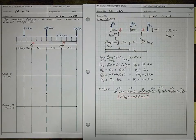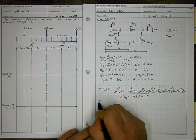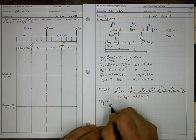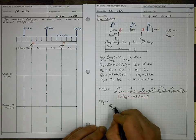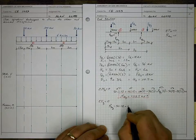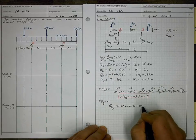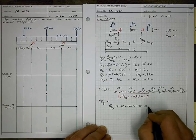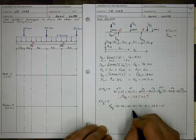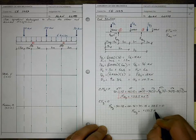Now we can solve for the other unknown, RAY, using the sum of forces in Y set equal to zero. Adding up all vertical forces: RAY minus 50 minus 18 (FR1) minus 100 minus 36 (FR2) minus 30 minus 18 (FR3) plus 118.5 (RBY) equals zero. Solving for RAY, we end up with a value of positive 133.5 kN acting in the upward direction.